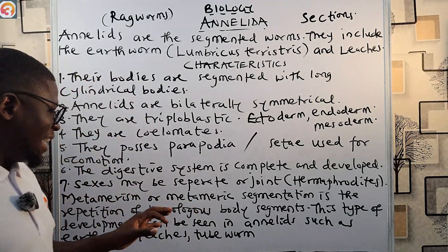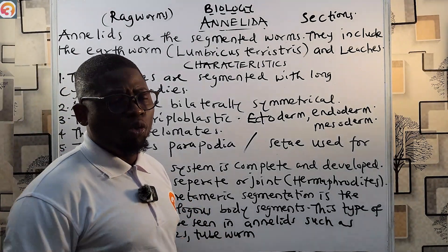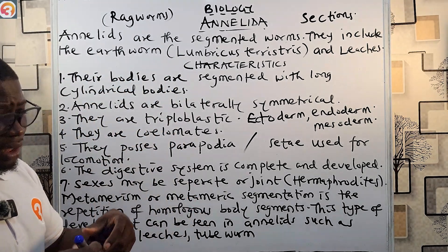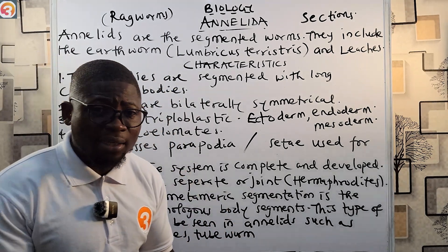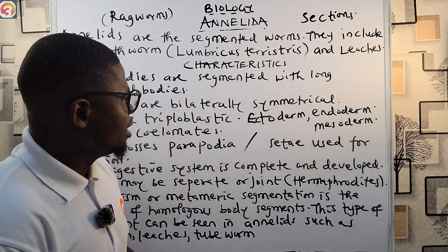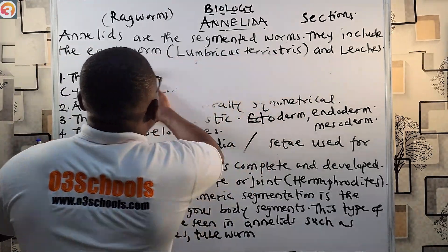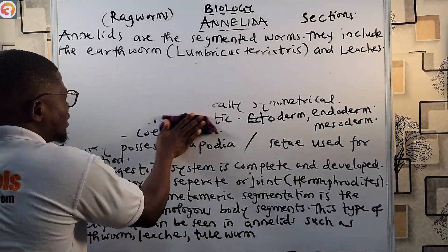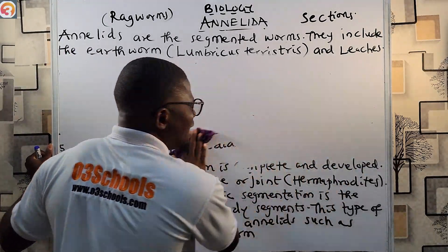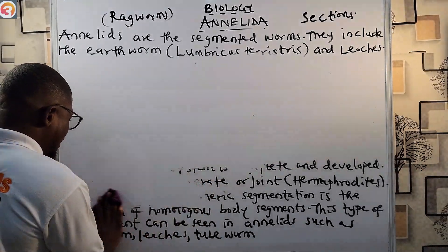Metameric segmentation can be found in annelids such as the earthworm, leeches, and tubeworm. It can also be found in higher species like the arthropods and chordates. However, note that the tubeworm is not metamerically segmented — it is an exception.